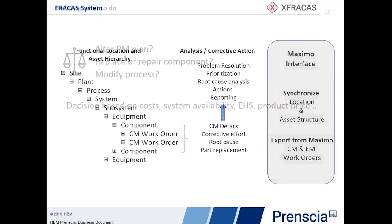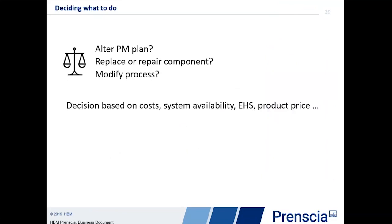Now, what happens when we are actually going through that resolution process? What should we do — should we alter our PM plans, repair or replace components, or modify the process? How do we go about making that decision? The decision could be based on things like maintenance costs, overall costs in the process, capital equipment costs. It could be related to system availability, environmental health and safety regulations, or any number of factors in your particular business.